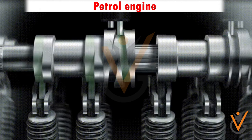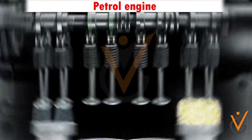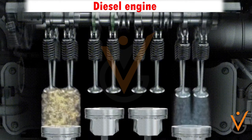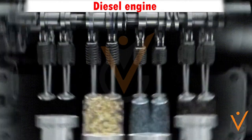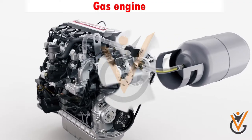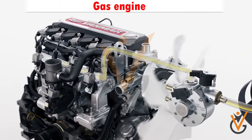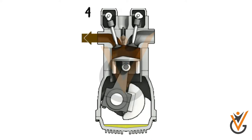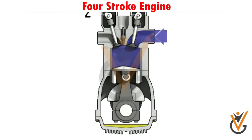A petrol engine is an engine which uses petrol for its working. A diesel engine is an engine which uses diesel for its working. A gas engine is an engine that uses gas fuel for its working. On the basis of number of strokes, the engines are further classified.